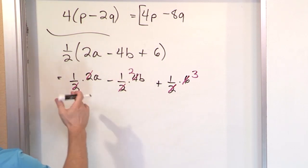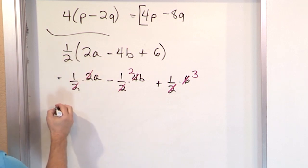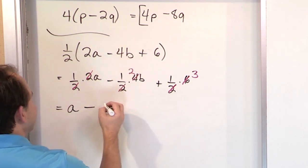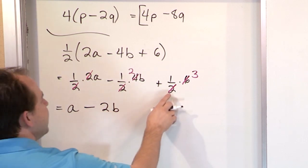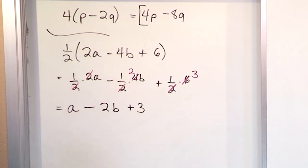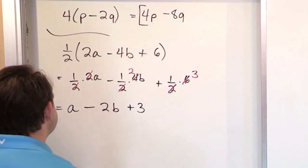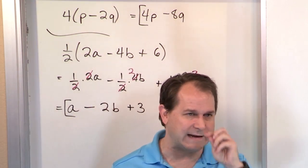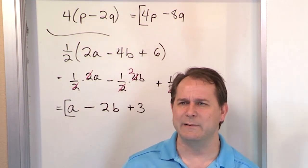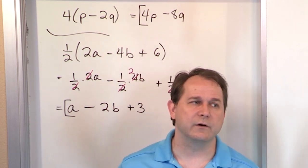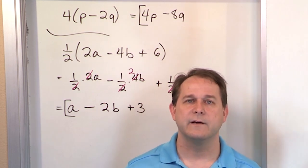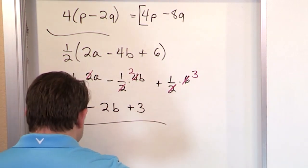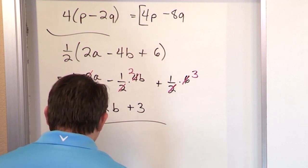Once this is all done, the 2s are gone. 1 times a gives you just a for the first term. The minus sign is still here, and after the cancellation you still have 2 and b, giving minus 2b. And everything else simplifies to just 3. So the answer is a minus 2b plus 3. This is just simplifying terms — we've covered that in Algebra 1 over and over. If you're unclear why we struck through top and bottom, go back to Algebra 1 and review simplifying expressions and cancellations.